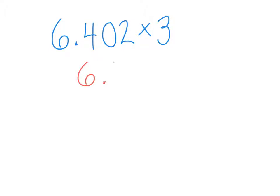6 decimal 402 times 3. And again, notice that my numbers are nice and spaced out, but my place values are not aligned, so I can multiply out quickly.